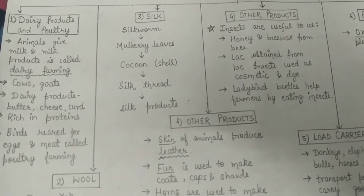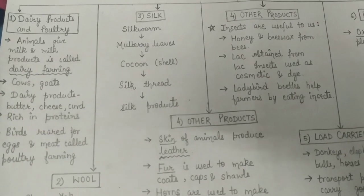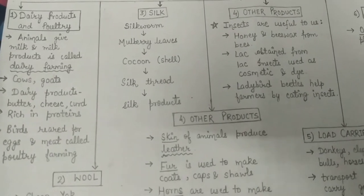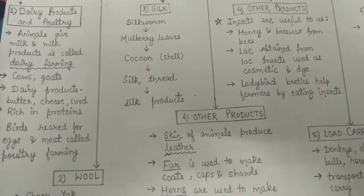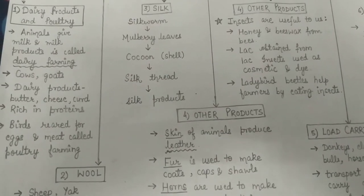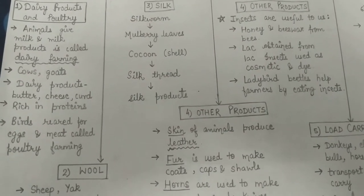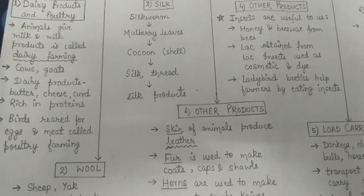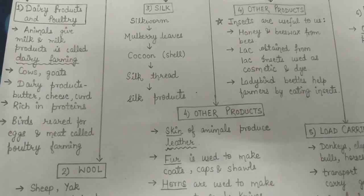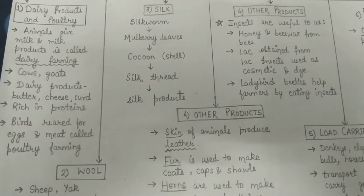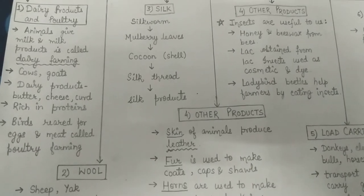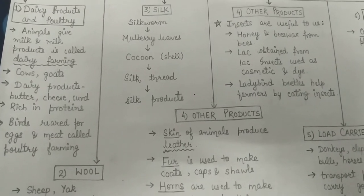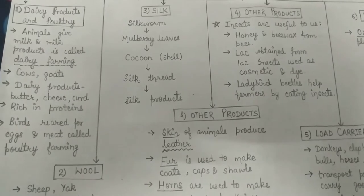Then comes poultry. When we rear birds for their eggs and meat, this is called poultry farming. For example, hens, ducks, and turkeys are reared for eggs and meat. So when animals are reared for milk and milk products it is dairy farming, and when birds are reared for eggs and meat it is called poultry farming. That is the basic difference between dairy farming and poultry farming.